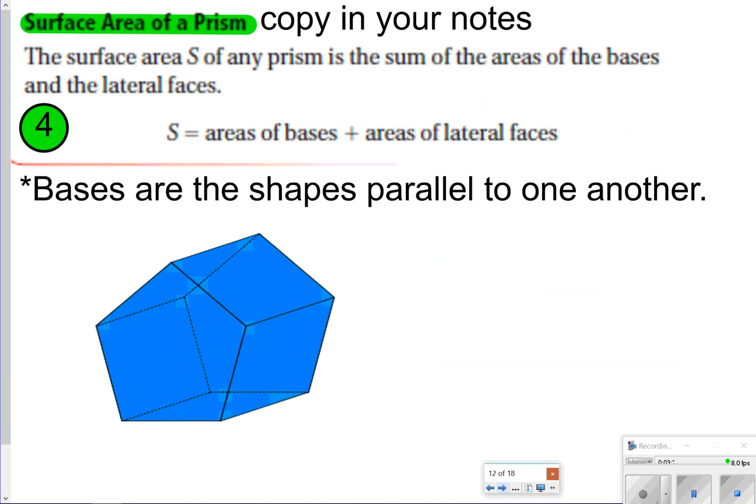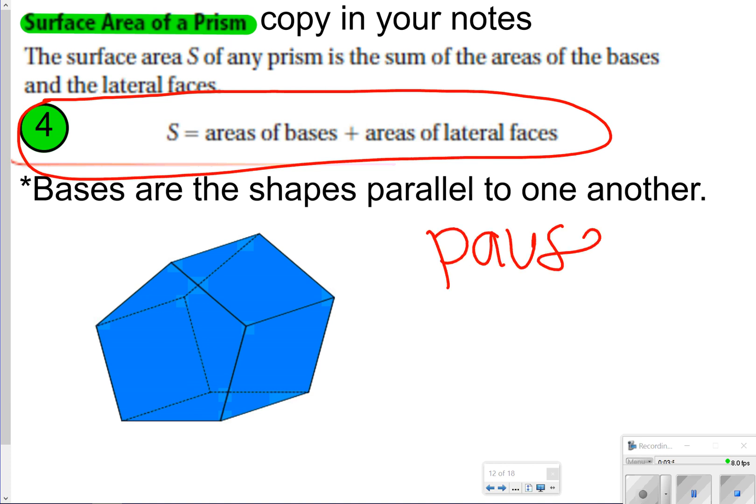The next part of the notes we're going to talk about is any type of other prism, and granted, this will work for your rectangular prisms as well, except for rectangular prisms we just had that nice formula. Let's go ahead and just copy this down real quick. This works for all prisms, as long as you can find the area of the bases and the area of the lateral faces, which are just the outsides or the sides that are not the base, and you add those together, then you can find the surface area. Go ahead and pause real quick and write down what I circled in red, and then once you're done, click play.